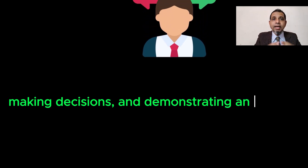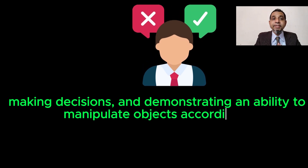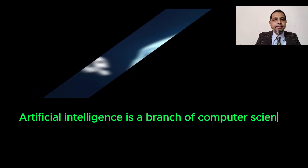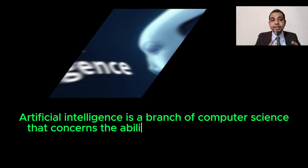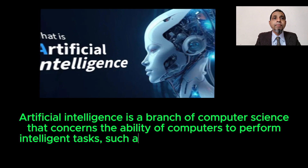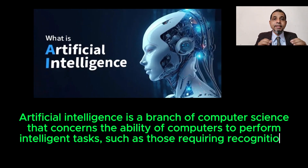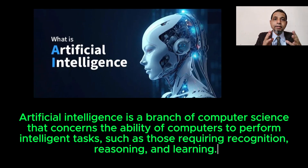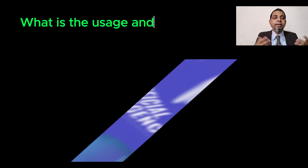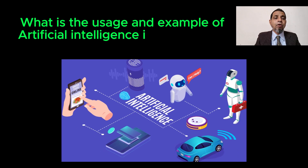According to a more suitable definition presented in 1986, artificial intelligence is a branch of computer science that concerns the ability of computers to perform intelligent tasks such as acquiring, recognizing, reasoning, and learning.